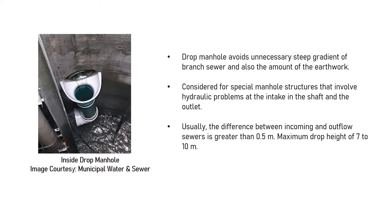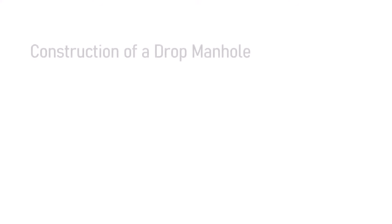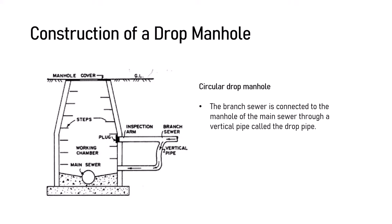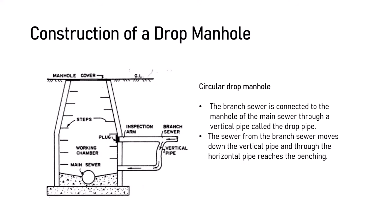Coming to the construction of a drop manhole system, a diagram of a circular drop manhole system has been shown. The branch sewer is connected to the manhole of the main sewer through a vertical pipe called the drop pipe. The sewer from the branch sewer line moves down the vertical pipe and through the horizontal pipe reaches the benching. A prolonged length of branch sewer with a plug is provided for inspecting or cleaning the branch sewer.